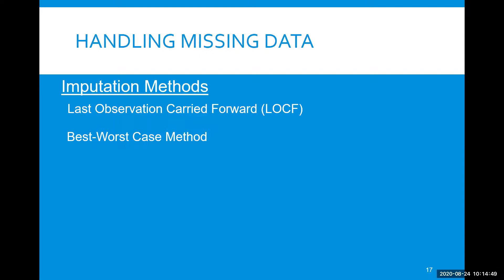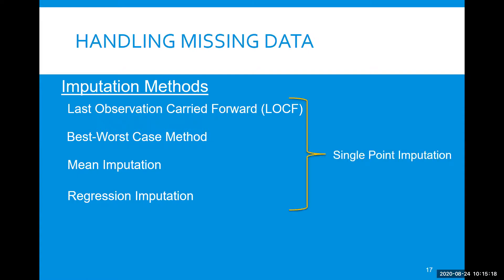There are other options, such as the best/worst case method, where you assign the best observed value to missing data in the placebo group and the worst observed value to missing data in the active group. Mean imputation substitutes the missing data with the mean of all observed values within the group, or you can use regression imputation, replacing missing observations with a predicted value from a regression model. All of these methods are what we call single-point imputation — you're assuming that once you've filled in that data, it is known and true.